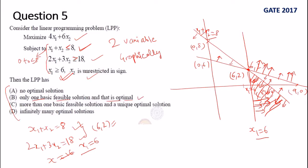If you read the other options - no optimal, more than one BFS, infinitely many optimal - it's going to be the right answer because it's the feasible region. So therefore there's only one feasible solution and that is optimal.